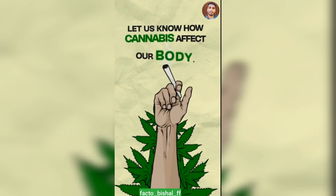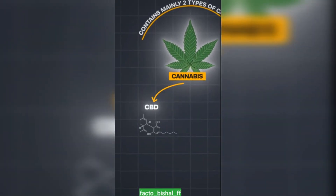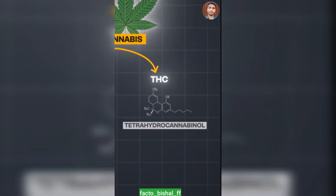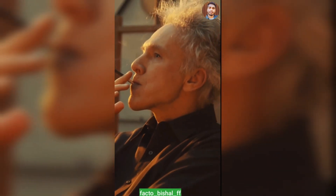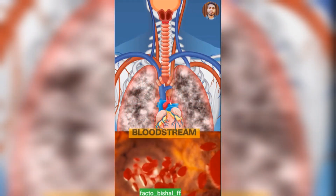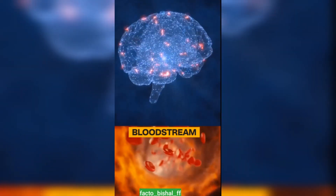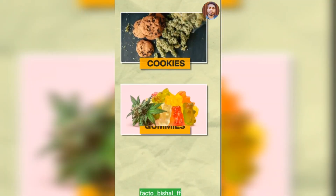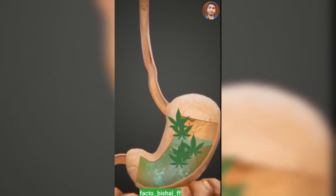Let's look at how cannabis affects our body. In cannabis, there are two key chemicals: CBD (cannabidiol) and THC (tetrahydrocannabinol). These two chemicals are responsible for the majority of its effects. When smoked, it reaches the lungs, enters the bloodstream, and then reaches the brain, where it binds to receptors and causes the person to get high. Cannabis can also be consumed in edibles like cookies, gummies, and brownies, entering the body through the digestive system.